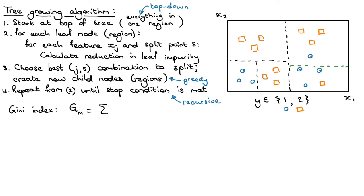The Gini index has the following equation. We calculate the Gini index in region M by adding up, for each of the possible classes from k=1 up to K, the proportion p of points in that region from class k, times one minus the proportion of training points in region M coming from class k. If I give you a specific region, you can calculate that number, and it gives you an indication of how pure that region is.